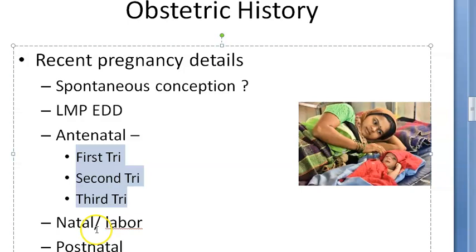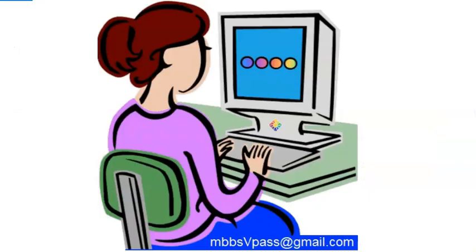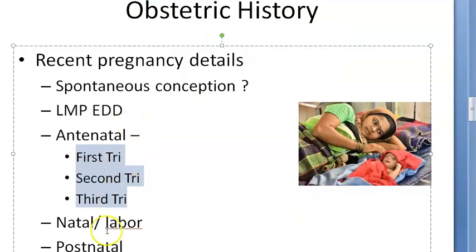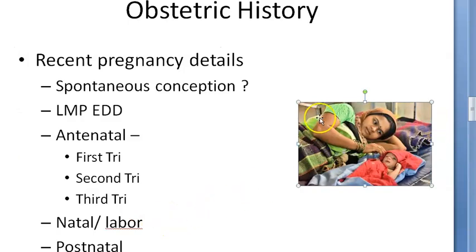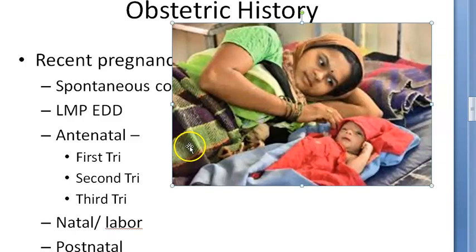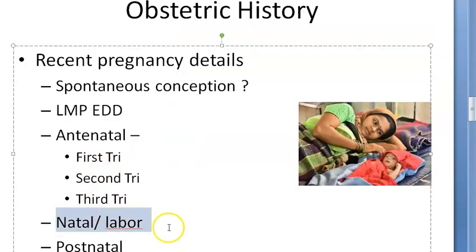All that you will ask first trimester, second trimester, third trimester, all this you will ask. Second trimester, when did she feel the quickening? Did she have any complication? Then third trimester, was the scan done? Was any scan done? Did she have any abnormal presentation? Did she have any hypertensive disorder? Did she have GDM? Has she taken any medications? What medications did she take? Did she have any radiation exposure? All complete details you have to ask the mother.